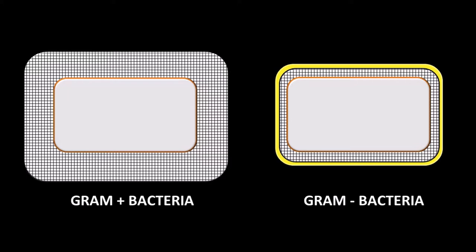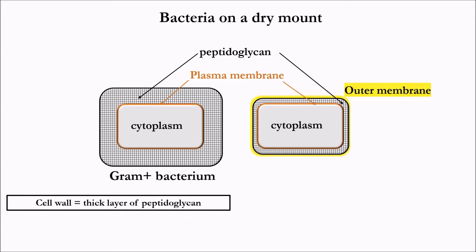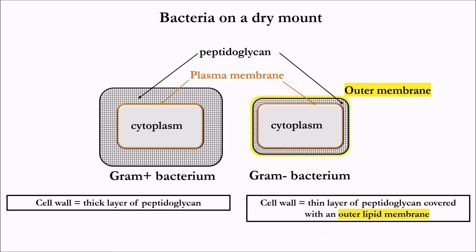You can follow the different stages of gram staining through this animation in order to understand the principle. Before doing this staining, a bacterial suspension is smeared on a slide, dried, and fixed. On the left is a gram positive bacterium whose wall is made up of a thick layer of peptidoglycan. On the right is a gram negative bacterium whose wall has only a thin layer of peptidoglycan covered with an outer lipid membrane.